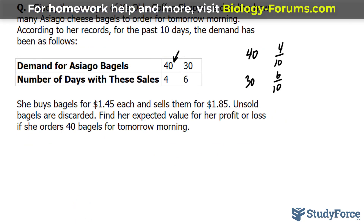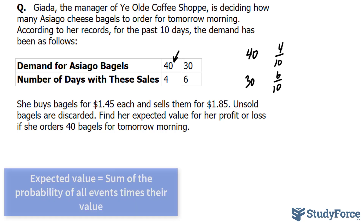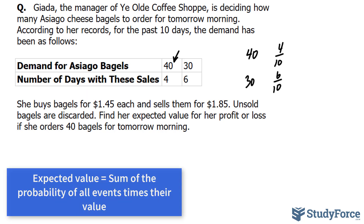Now in case you forgot, the expected value is often referred to as the long-term average or mean. What this means is that over the long term of doing an experiment over and over, you would expect this average — the expected value — every time you perform a particular experiment. To calculate the expected value, we look at the probability of an event and multiply it by the value associated with that probability. You do this for all the events and sum them up.